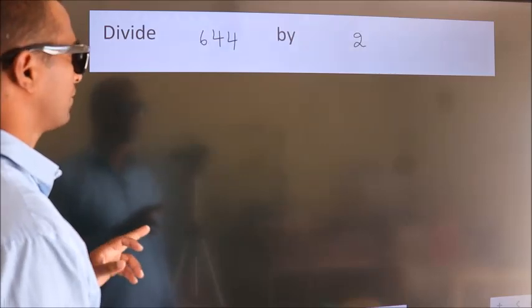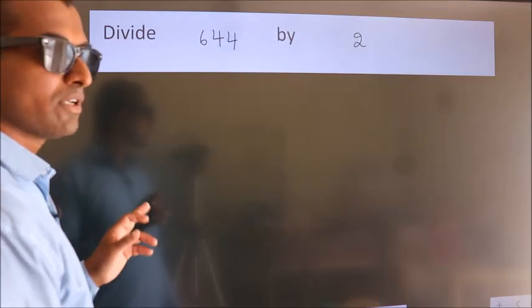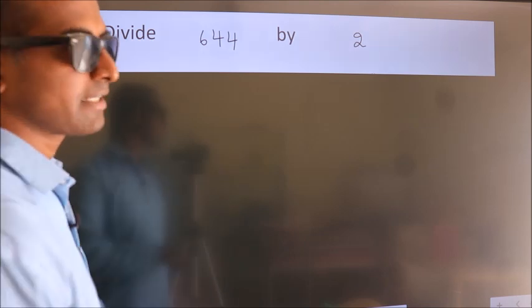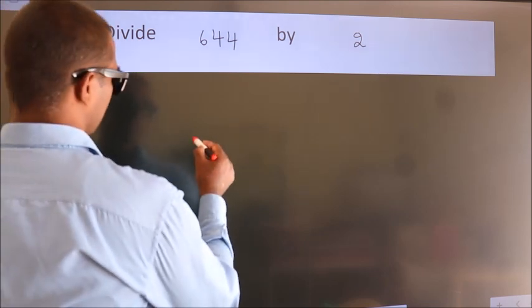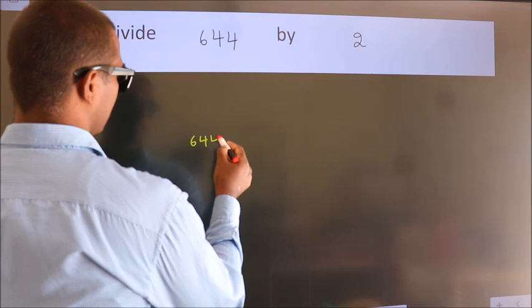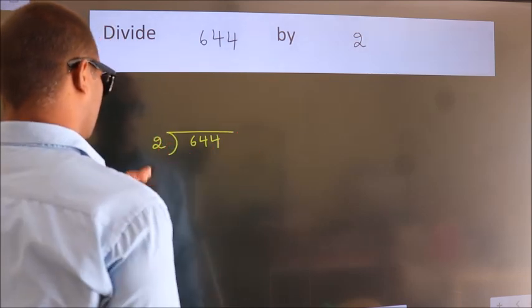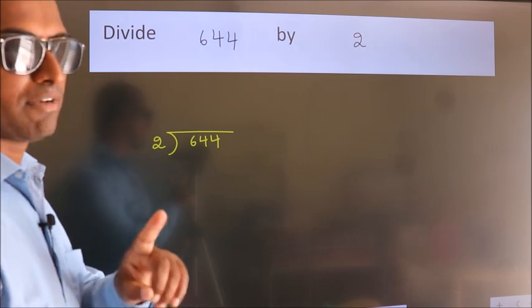Divide 644 by 2. To do this division, we should frame it in this way. 644 here. 2 here. This is your step 1.